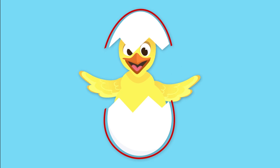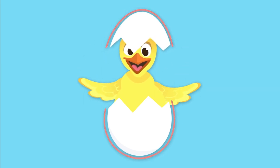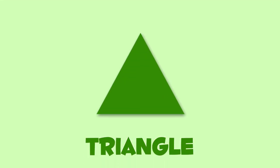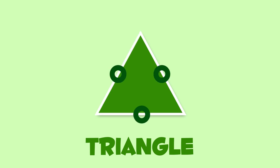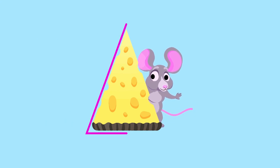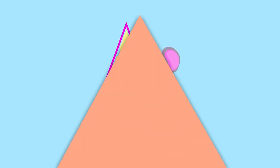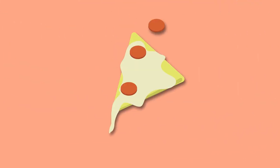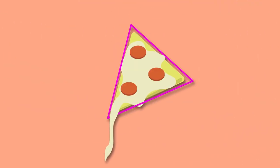This is a triangle. It's a polygon with three sides and three angles. The triangle is like this piece of cheese, or like this slice of pizza.